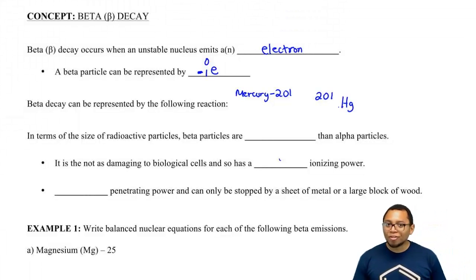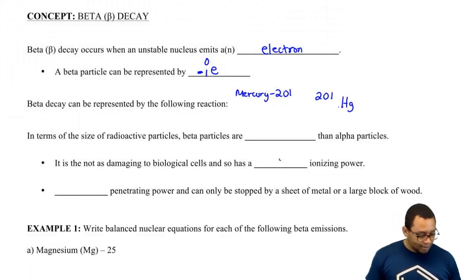If we look on our periodic table, mercury has an atomic number of 80. We're going to say we're going to emit a beta particle.